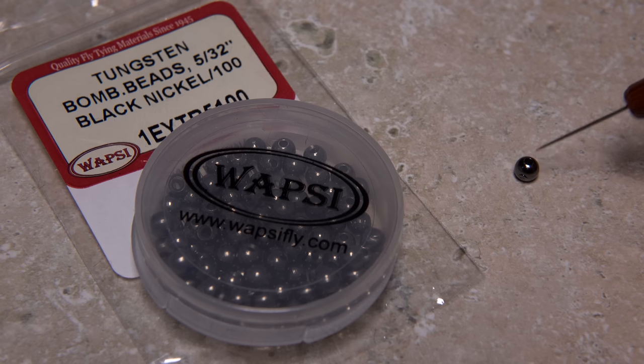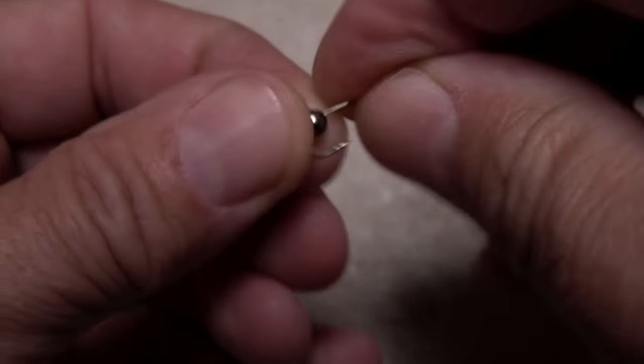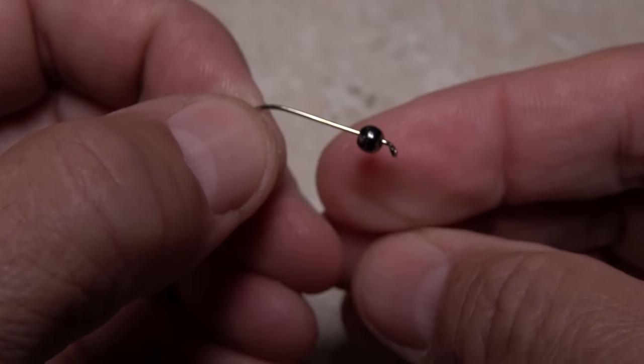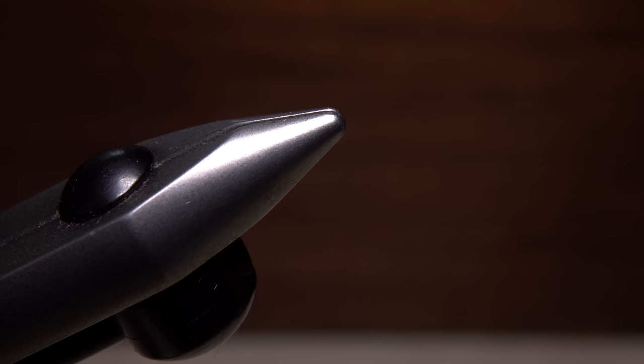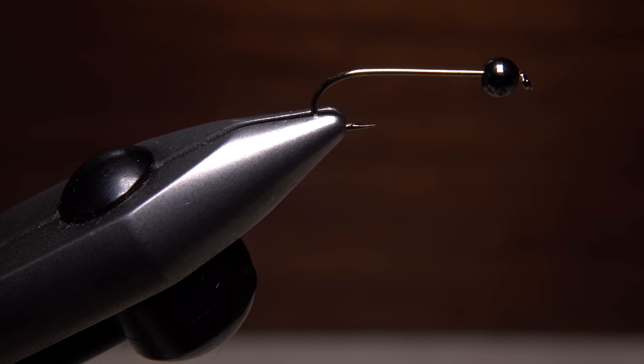I like to pick up the bead with my bodkin and get the small hole centered between my fingertips. This allows me to insert the point of the hook into the small hole and bring the bead around the bend and up to behind the eye. I'll then get the assembly firmly secured in the jaws of my tying vise.